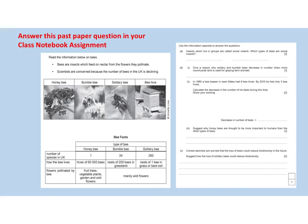Finally, I want you to go and answer this past paper question in your class notebook assignment — it's about biodiversity involving bees in the UK. Once you've answered that question, hand in your class notebook assignment, and that's it for today's lesson — thanks.